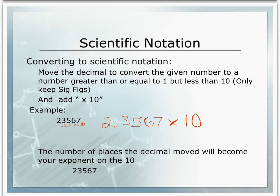Then we're going to add a times 10. Once we have that set up, we need to figure out the exponent, which is based on the number of places we've moved the decimal. Our decimal was to the right of the 7, and if we move it to make 2.3567, we move it 1, 2, 3, 4 times. So our exponent is going to be 4.